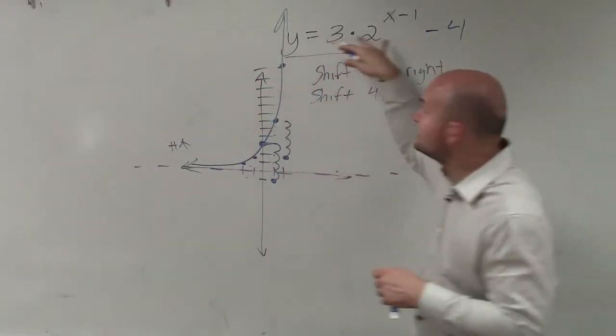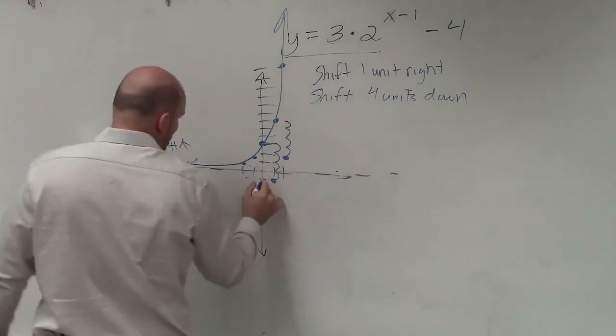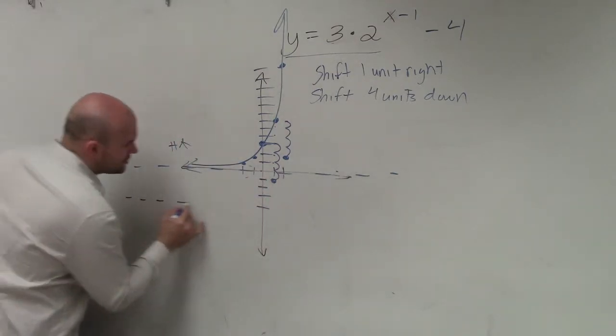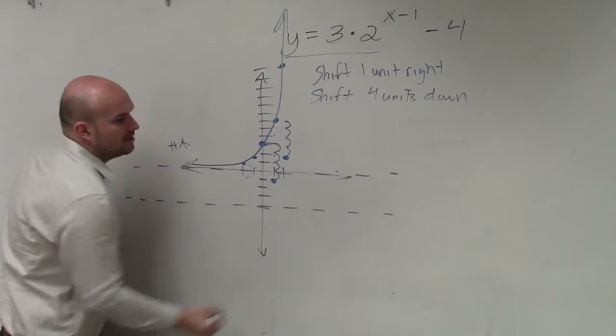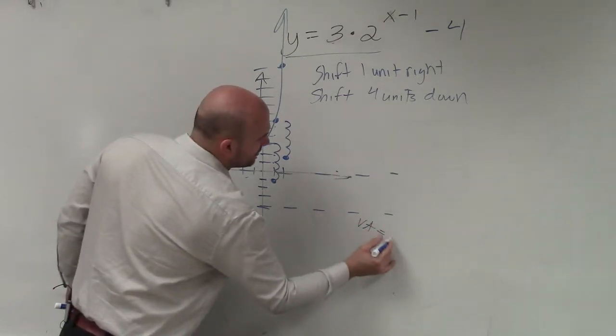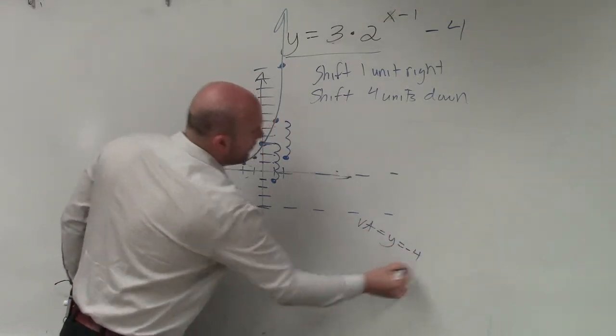So since I'm shifting down 4, I'm going to take this asymptote, 1, 2, 3, 4, and I'm going to create my asymptote at y equals negative 4.